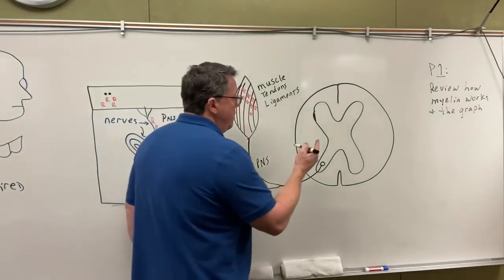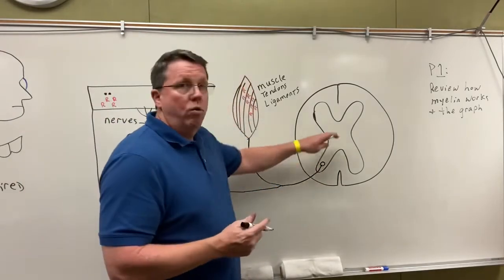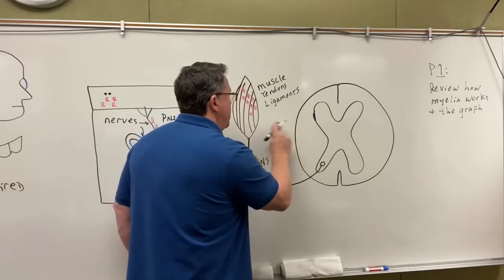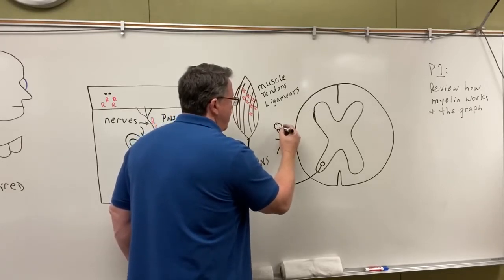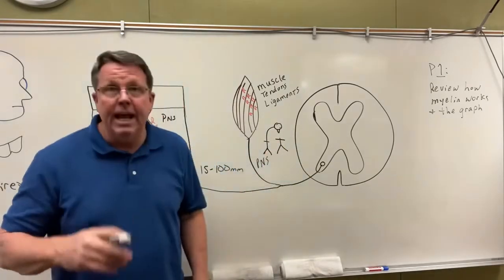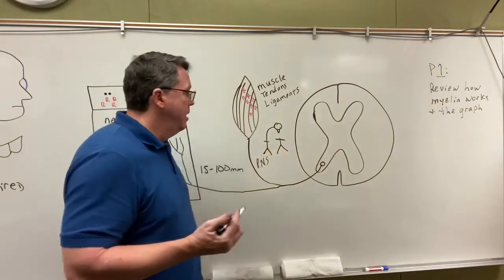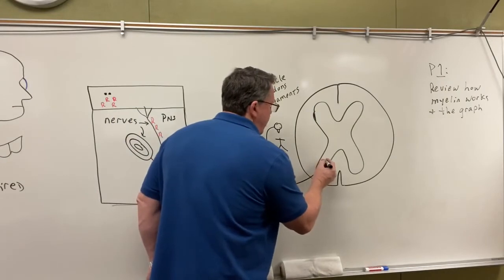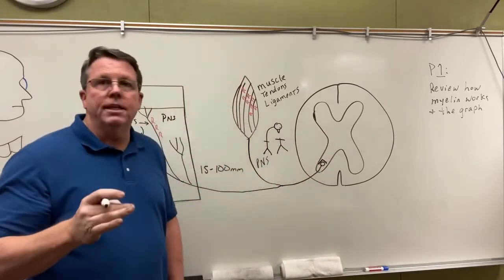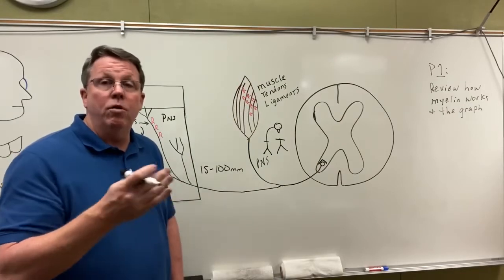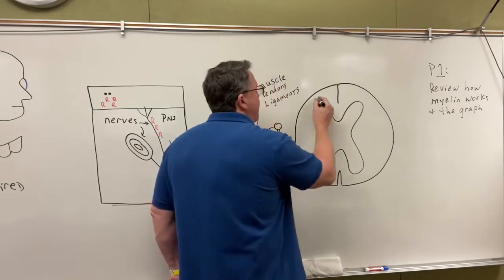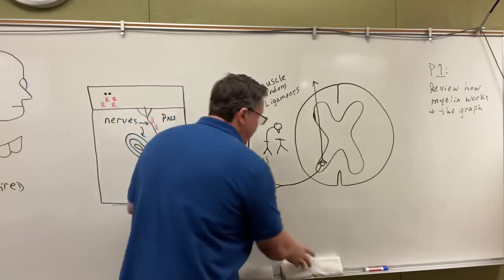The spinal cord, viewed in cross-section, has nerves connected to it that go up to the brain or come down from the brain. Rabies can affect either sensory nerves or motor nerves — motor nerves being those that go to muscles. The rabies virus will get into these nerves and travel up to the brain.